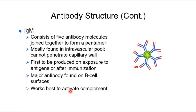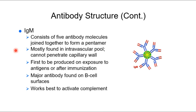By contrast, IgM is the biggest antibody — it's a pentamer, meaning five antibodies joined together. Because it's a large molecule, you'll only find it within blood vessels — in the intravascular pool — it cannot penetrate the capillary wall. But IgM is the first responder. Your lab results will show elevated IgM early in infection, and then it will decline. IgM is found on B cell surfaces, where memory B lymphocytes carry antibodies on their plasma membrane.